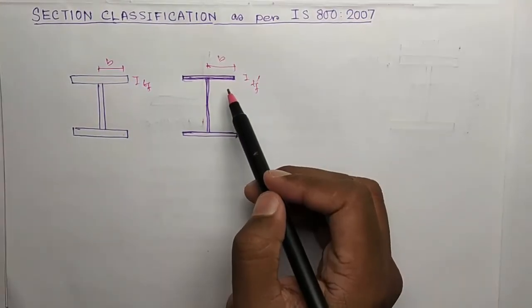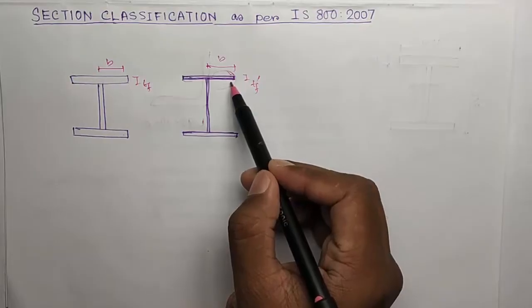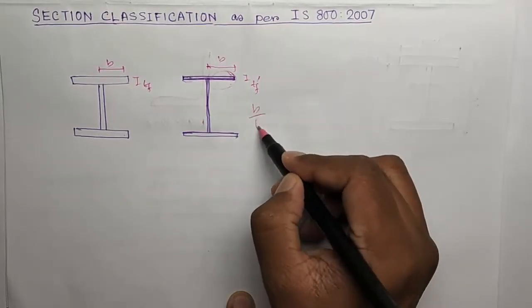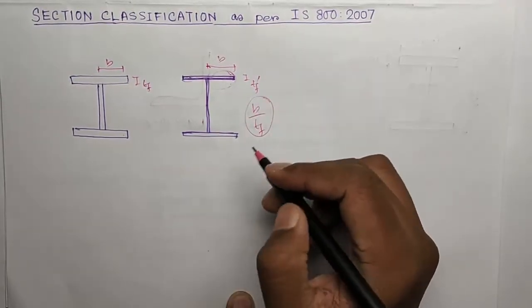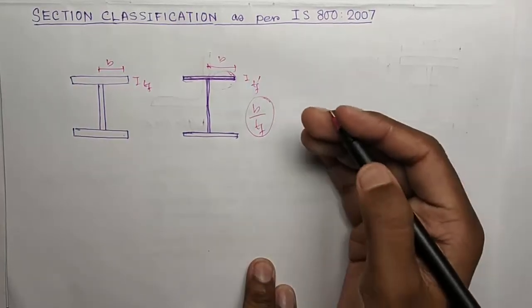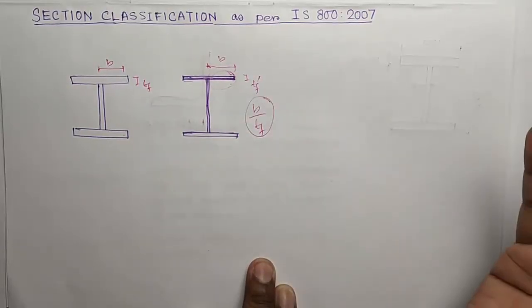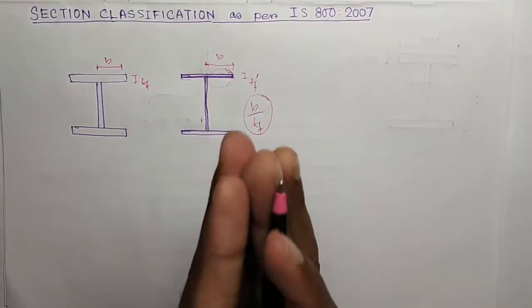We can easily understand as this thickness is very small there is more chance of buckling. So this B by TF ratio, this is called width by thickness ratio. If it increases, the chances of buckling increases. So on the basis of this width to thickness ratio, the sections are classified into four classes.